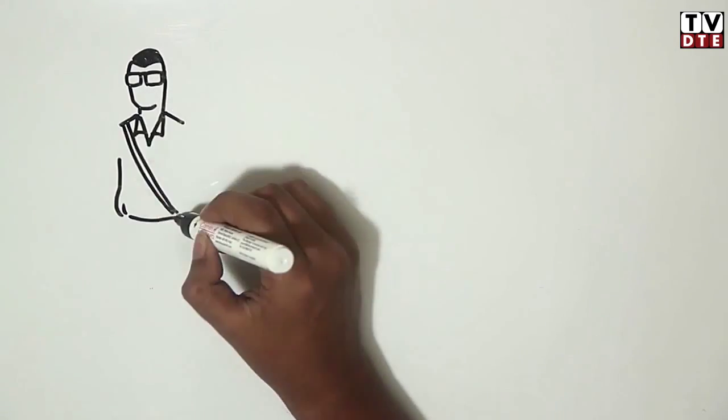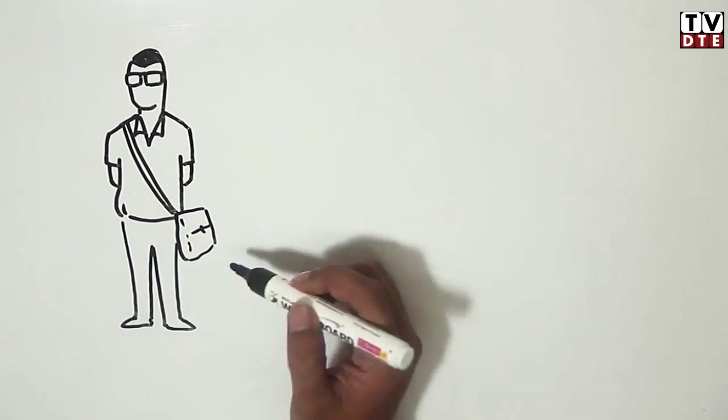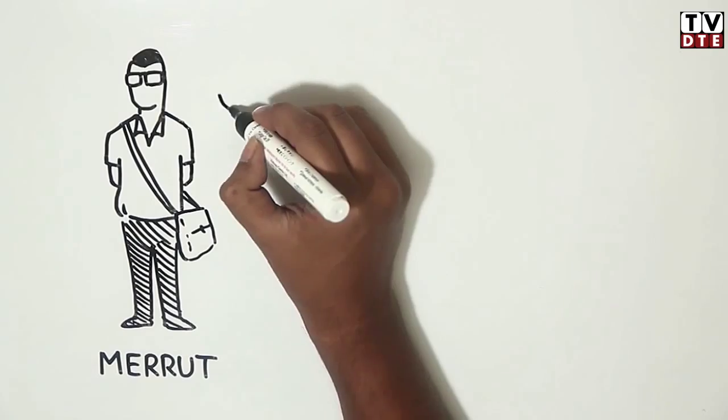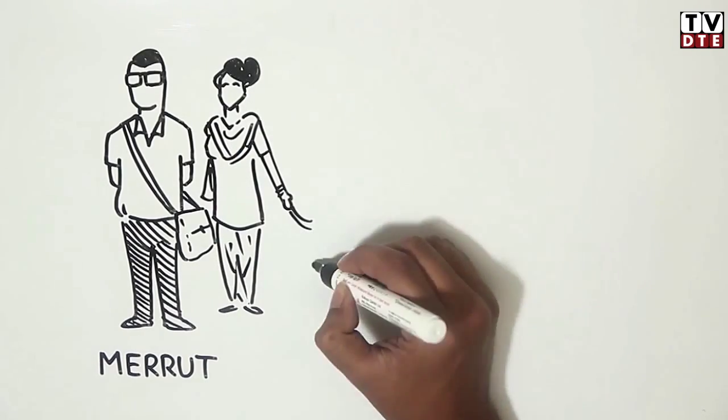Meet Mr. Saxena, a middle-aged banker who lives in a medium-sized city called Meerut. He lives with his wife and two children.